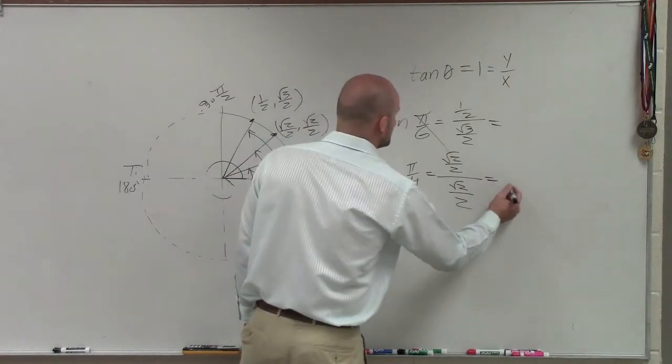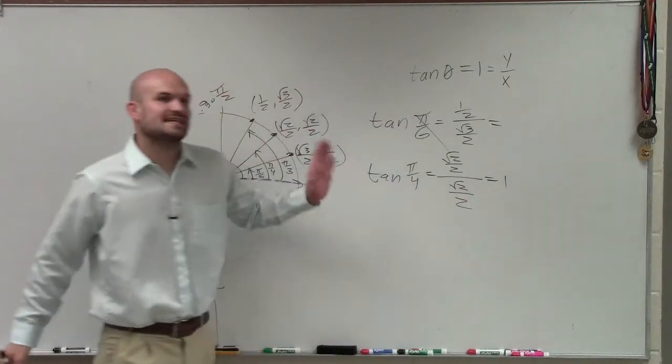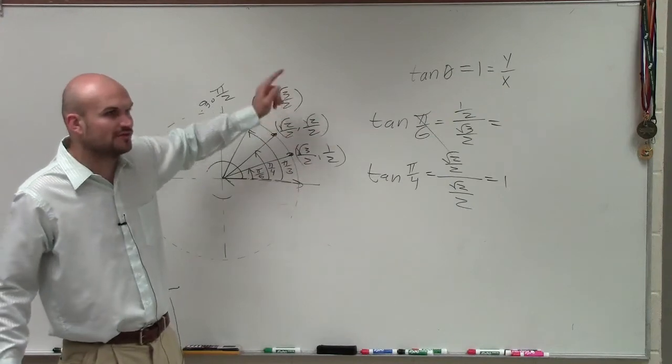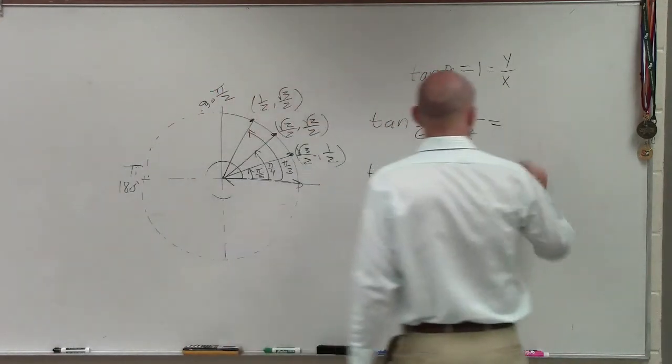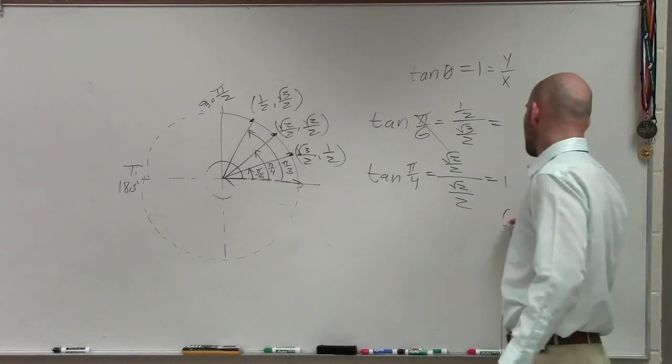And since that's the only angle in the first quadrant where the ratio of y over x gives me 1, that's going to be my angle. So therefore, π/4 is my angle in radians.